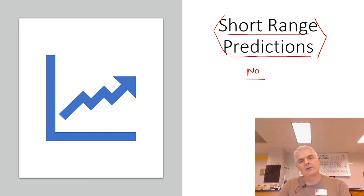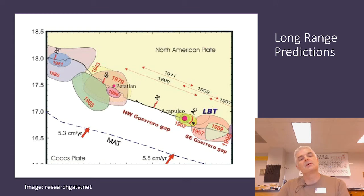But long-range predictions, on the other hand, are interesting. Because what you can do, for example, here's a classic example. You've got the North American plate, Acapulco, so this is in Mexico, and they can find earthquakes.